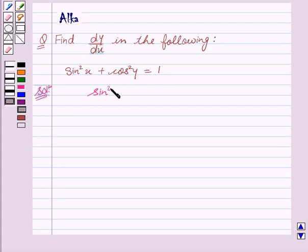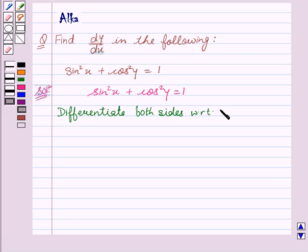Our given equation is sin square x plus cos square y equal to 1. Differentiate both sides with respect to x. We get d by dx of sin square x plus d by dx of cos square y equal to d by dx of 1.